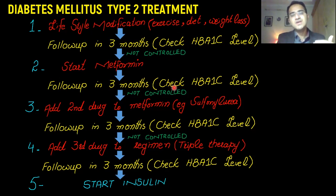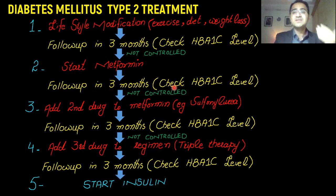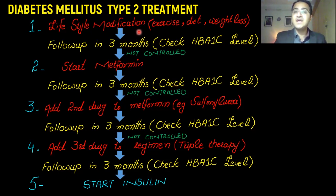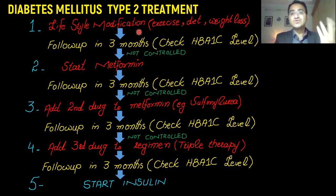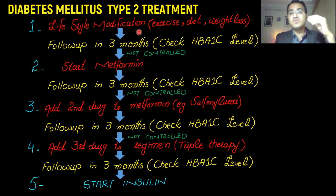One important point: at each and every follow-up visit, when moving ahead in treatment, you must always look into the cause of increased glucose levels and search for the cause of poor glucose control. Sometimes patients are not compliant — they are either not following lifestyle modifications or not taking medications properly. If the cause is poor compliance, you stick to the same line and ask the patient to be more compliant, or you increase the dose within the same line.